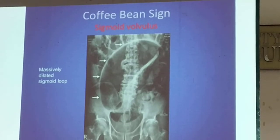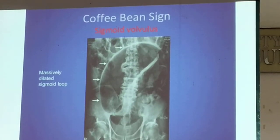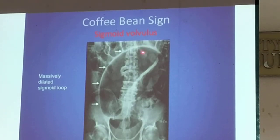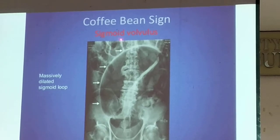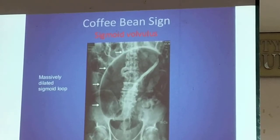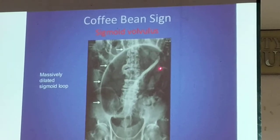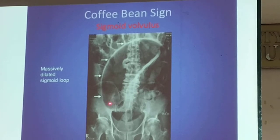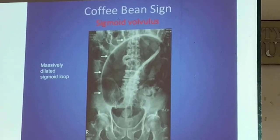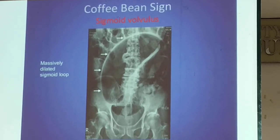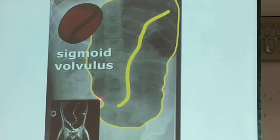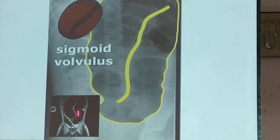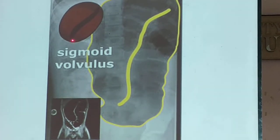As mentioned earlier with the sentinel loop, compare this with the coffee bean sign — this is pathognomonic to sigmoid volvulus. This is the coffee bean shape: your sigmoid neck twist. Use the picture as your reference for what a coffee bean looks like.